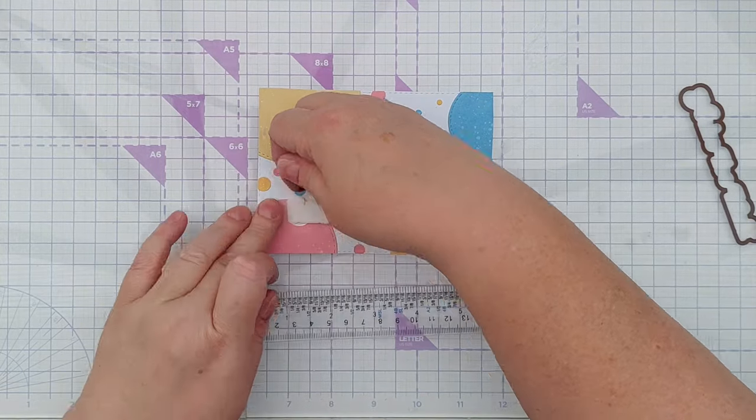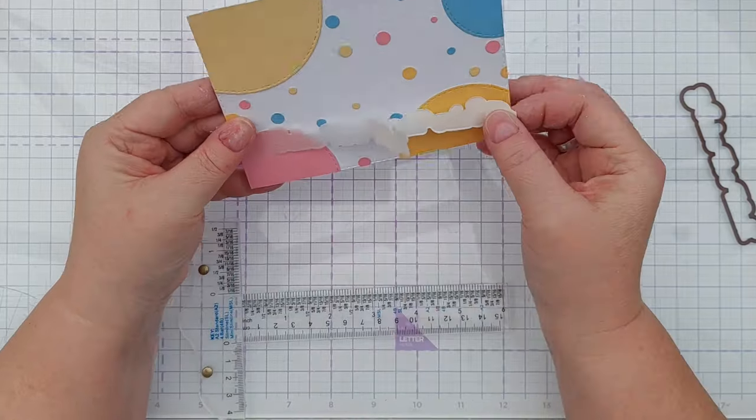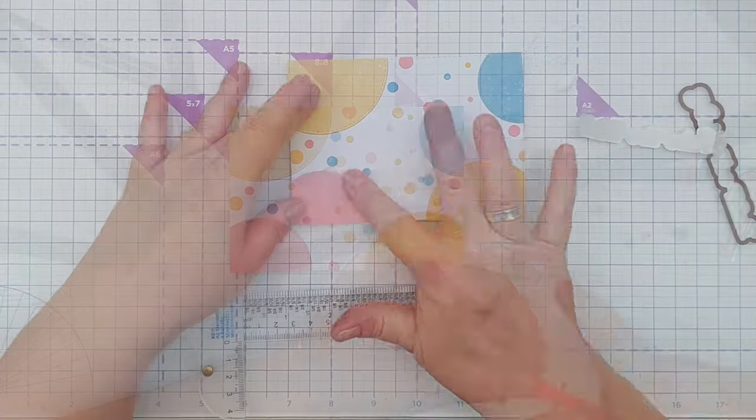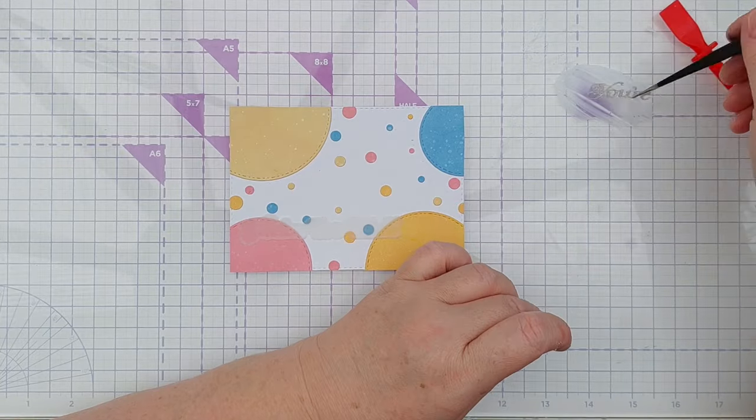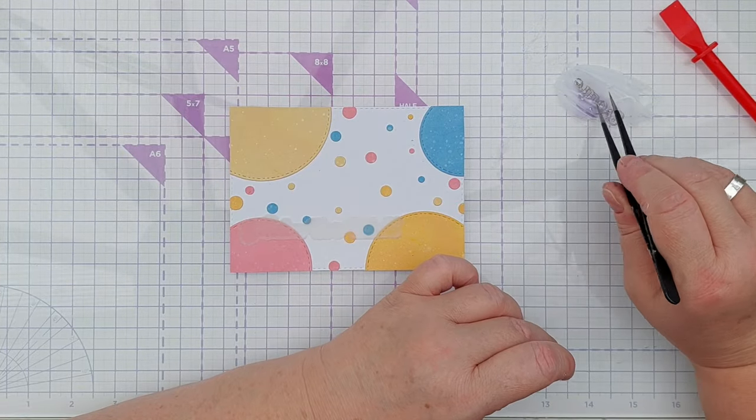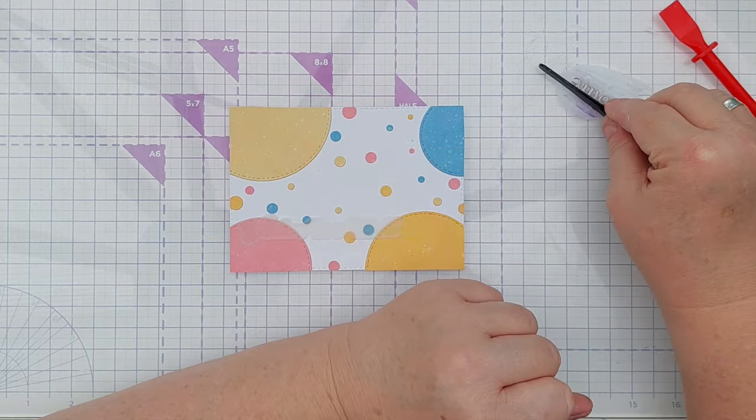To stick down my glittery words I just put some tacky glue on my mat, spread it out with a glue spreader, then dipped my words in and positioned them on the vellum.